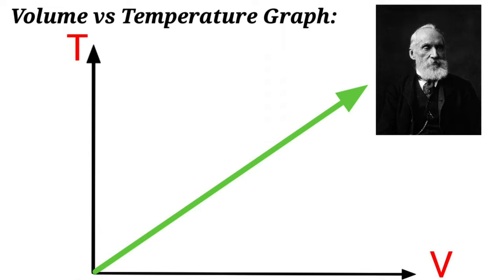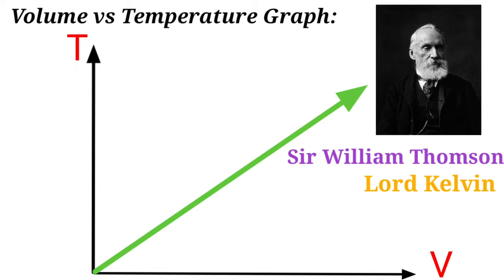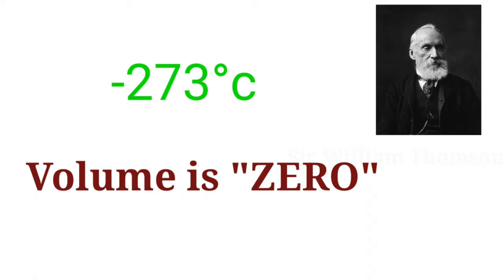In 1848, the Scottish-Irish physicist Sir William Thomson, also known as Lord Kelvin, discovered that as temperature decreases, the volume also decreases. And as the temperature becomes minus 273 degrees Celsius, the volume becomes zero.